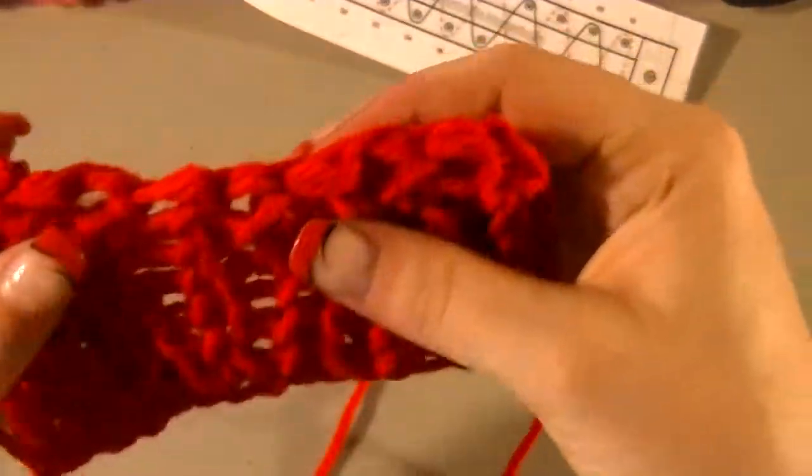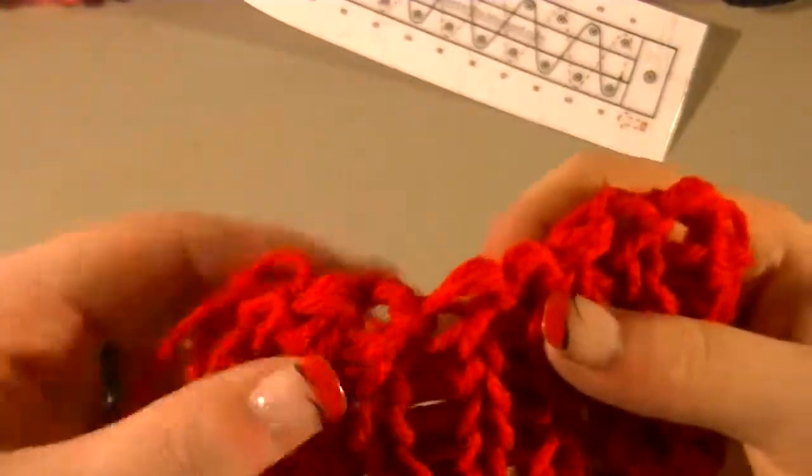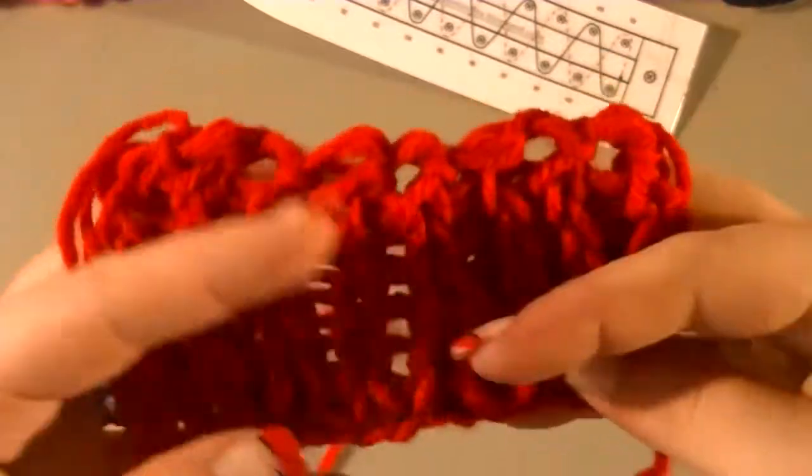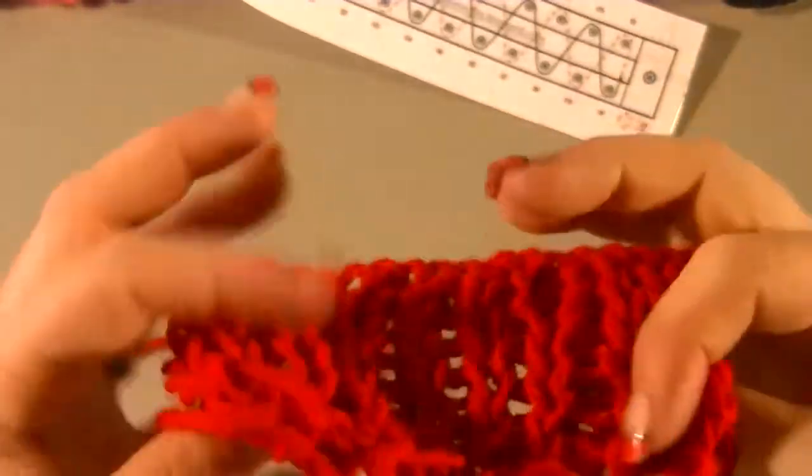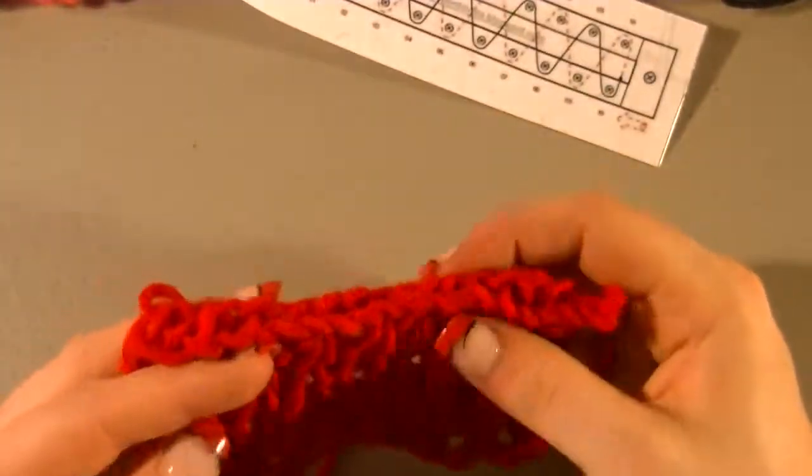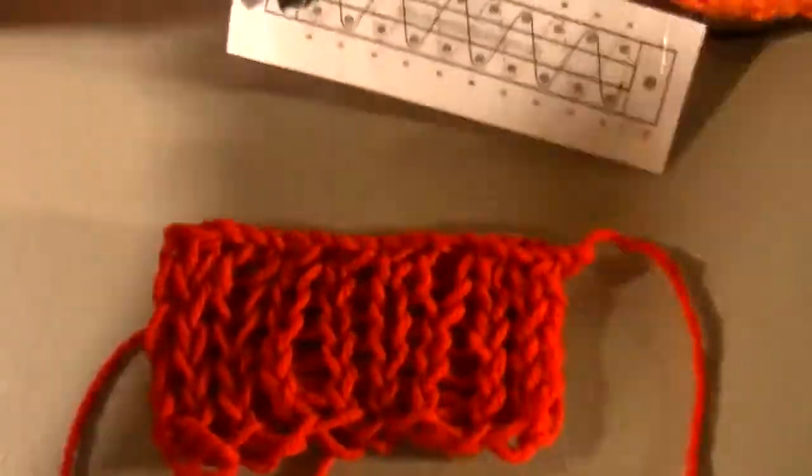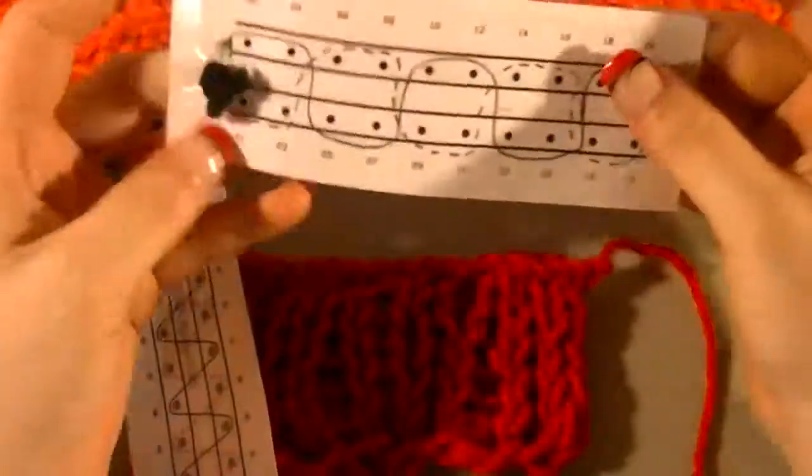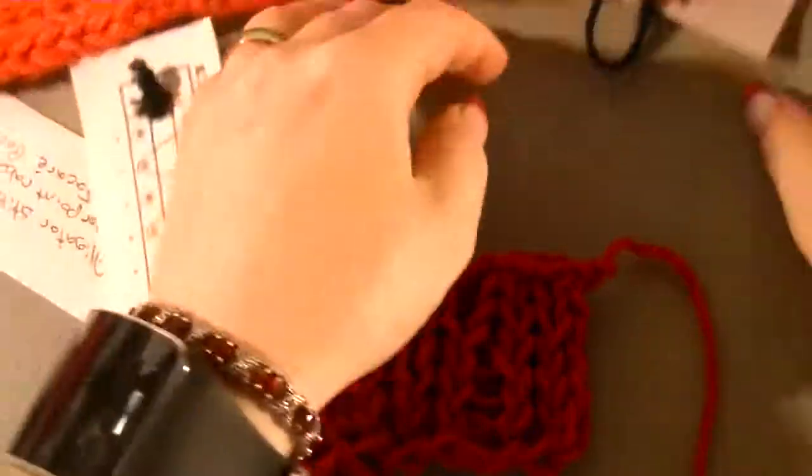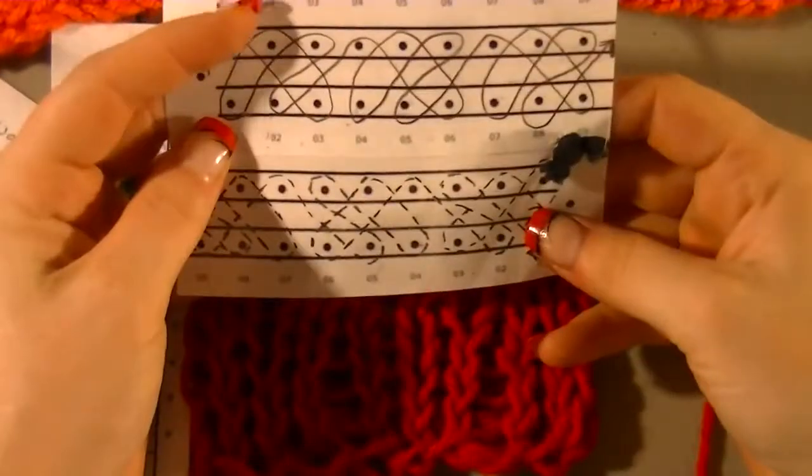This one would look better if it was done with two strands or a smaller gauge loom. But basically you can do this method with any of your rake style stitches. That is how you will do your cast off. That's how you will do your beginning edge.